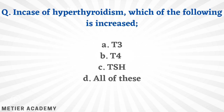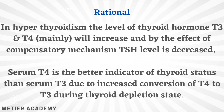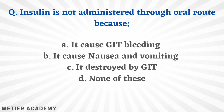Next: in hyperthyroidism, which of the following is increased — T3, T4, TSH, or all of these? The correct answer is option B, T4. In hyperthyroidism, levels of both T3 and T4 increase, but mainly T4 increases. By compensatory mechanism, TSH level decreases. Serum T4 is selected because it is a better indicator of thyroid status than T3.